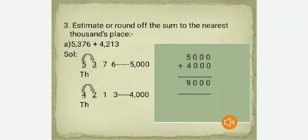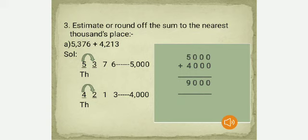Next, estimate or round off the sum to the nearest thousands place. For 5,376: the digit to the right of the thousands place is 3, less than 5, so round down to 5,000. For 4,213: the next right digit is 2, less than 5, so round down to 4,000. Adding 5,000 + 4,000 gives an estimated sum of 9,000.